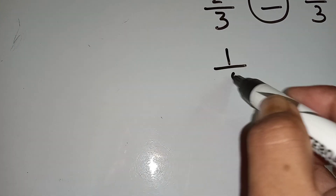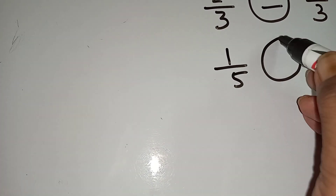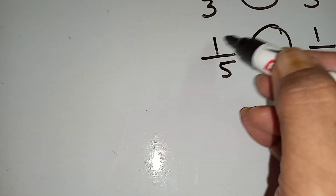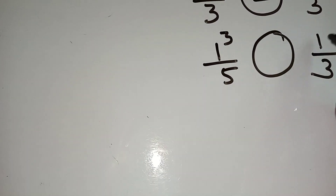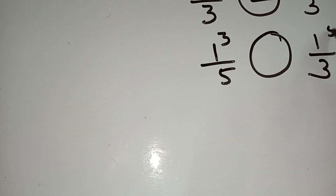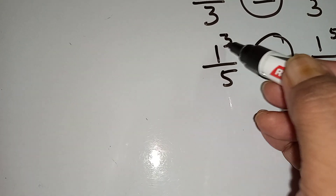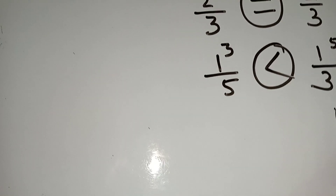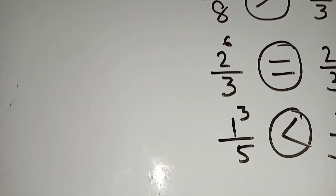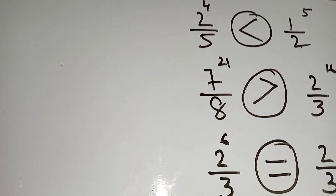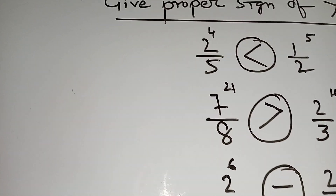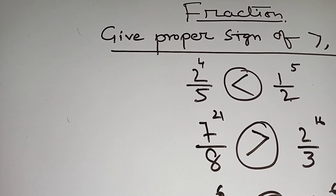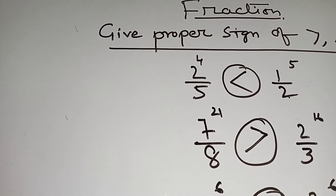1 by 5, 1 by 3. 3 to 1, that means 3. 5 by 1 means 5. This is greater than this, then you will give this sign. By this way you can find which one is the greater fraction than the other fraction.